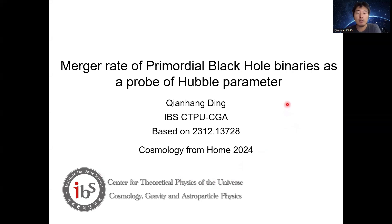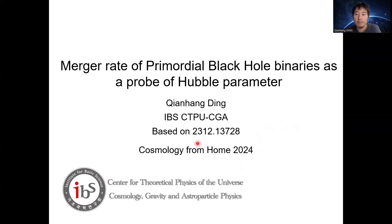I'm very happy to give the talk on the merger rate of primordial black hole binaries as a probe of the Hubble parameter. I'm Chen Hong-Ding from the Institute for Basic Science, Center for Theoretical Physics of the Universe, Cosmology, Gravity, and Astro-Particle Physics Group. This talk is based on this paper.